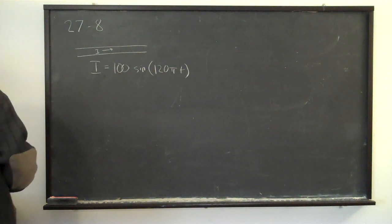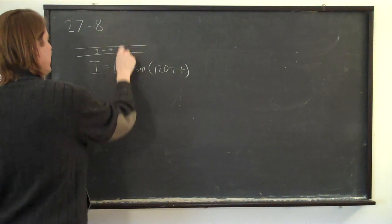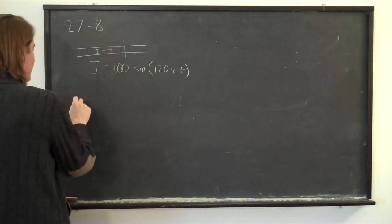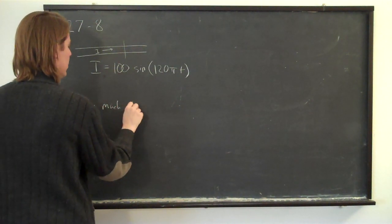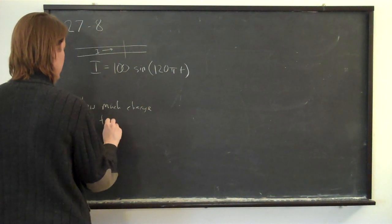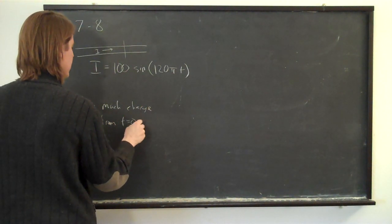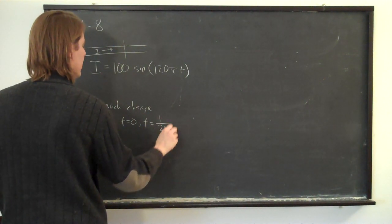The question is, at some point, how much charge, if you consider just one plane, one cross-section of the wire, how much charge from T equals zero to T equals one two hundred and fortieth of a second.